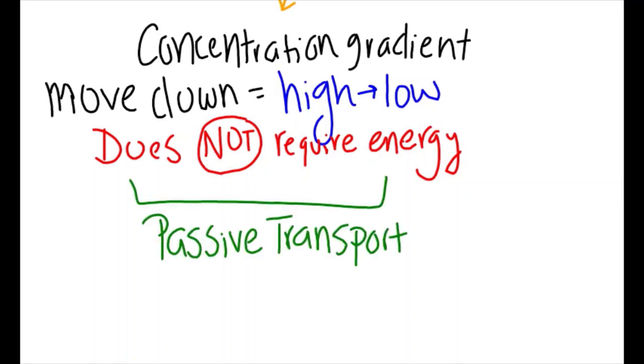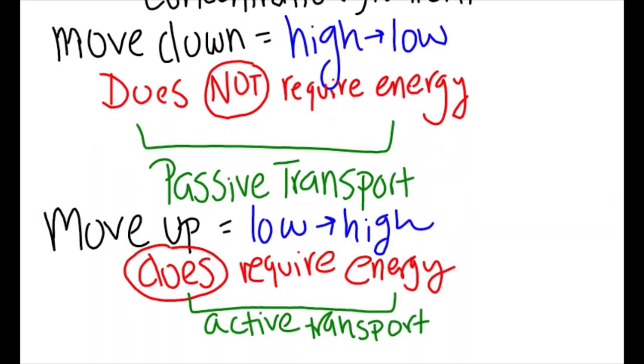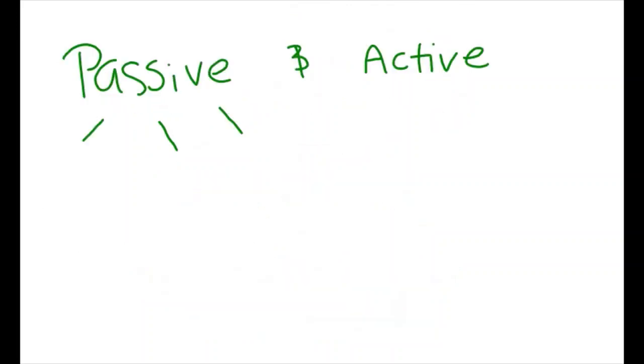This kind of transport is called passive transport. Its opposite, active transport, moves up the concentration gradient, from low to high, and requires energy to be moved. Now, within each set of transport, there is a subset of each type. We are going to focus on passive transport and its subsets.